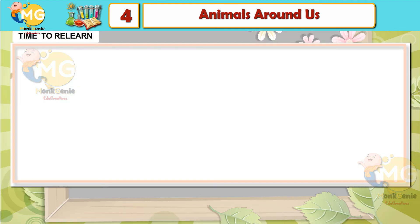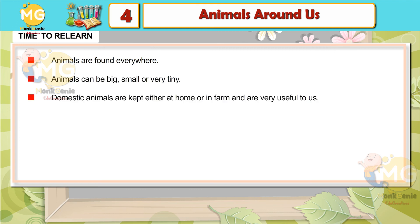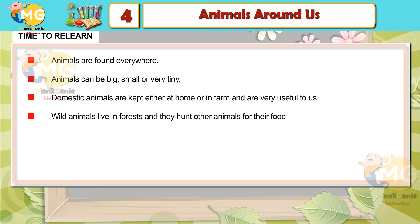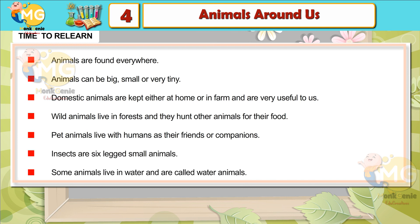Time to relearn: Animals are found everywhere. Animals can be big, small, or very tiny. Domestic animals are kept either at home or on a farm and are very useful to us. Wild animals live in forests and hunt other animals for food. Pet animals live with humans as friends or companions. Insects are six-legged small animals. Some animals live in water and are called water animals.